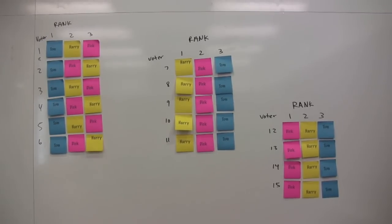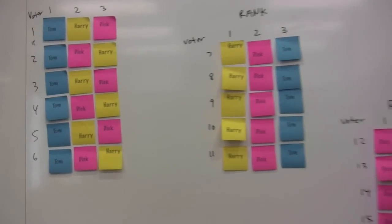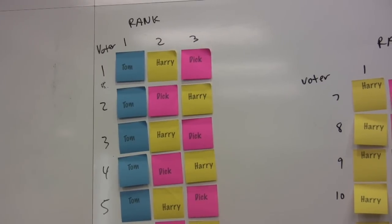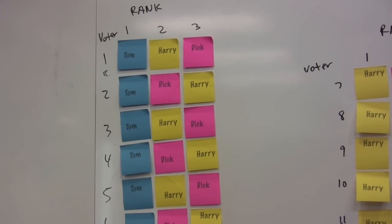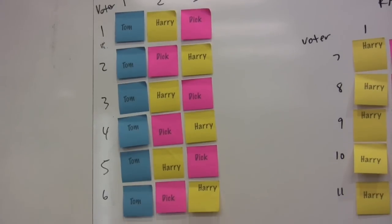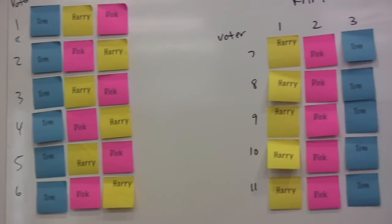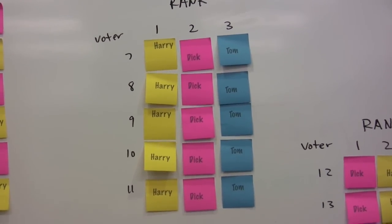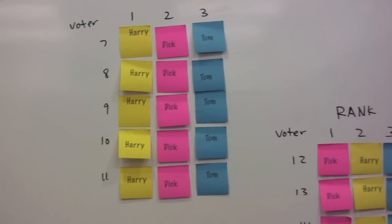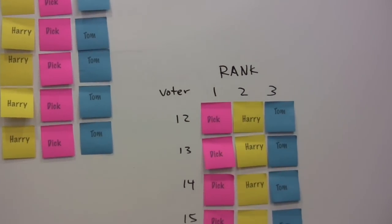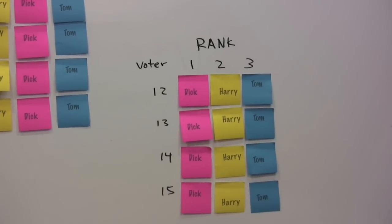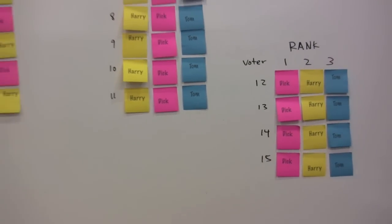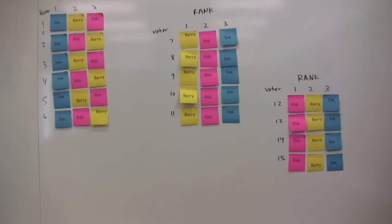Here's how the voting came out. Those that voted for Tom first might vote for Harry or Dick in second. Those that voted for Harry first would have voted for Dick second, Tom third. And those that voted for Dick first would have voted for Harry second. Let's go ahead and pull those off and see how the final votes were tallied.